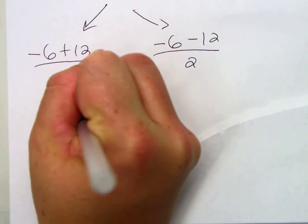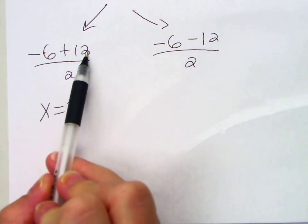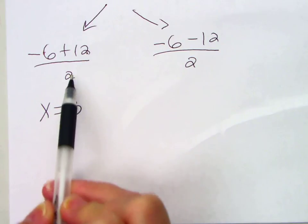Negative 6 plus 12 divided by 2. You get 3. X equals 3. And think about it. What's negative 6 plus 12? 6 over 2 is 3.